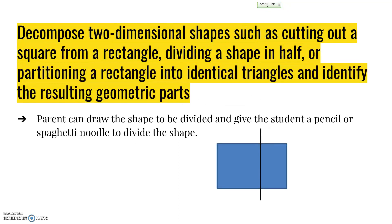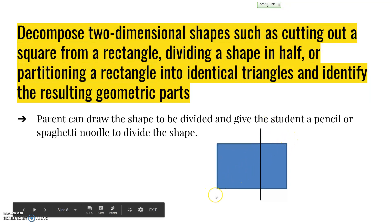They'll also decompose or take apart two-dimensional shapes, such as cutting out a square from a rectangle, dividing a shape in half, or partitioning a rectangle into identical triangles, and identify the resulting geometric parts. If you took this rectangle and divided it this way, you'd have a square (a special rectangle) and a rectangle that is not a square. If we drew that line diagonally, we'd create two triangles. We can take shapes, divide them different ways, and identify the new shapes created.